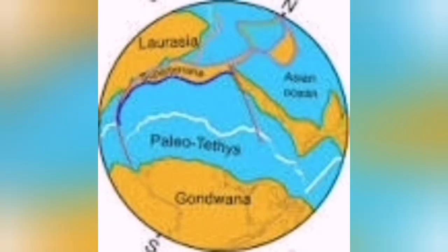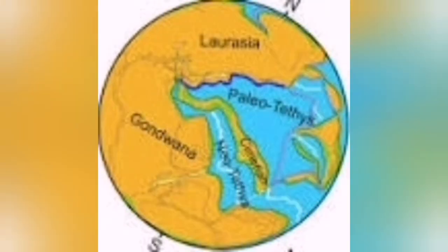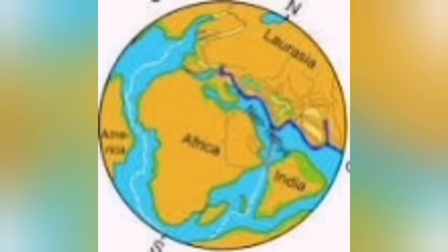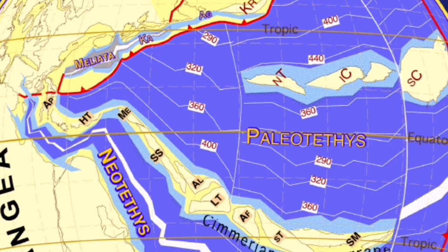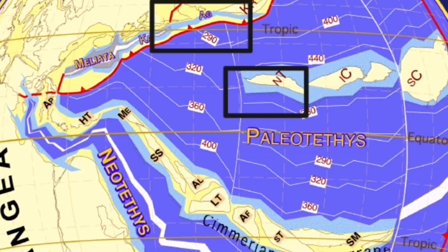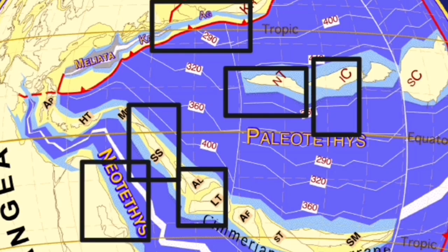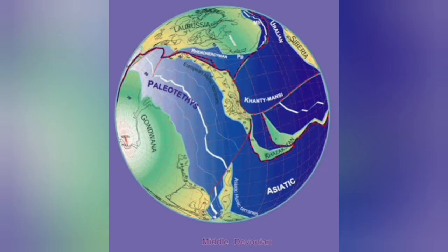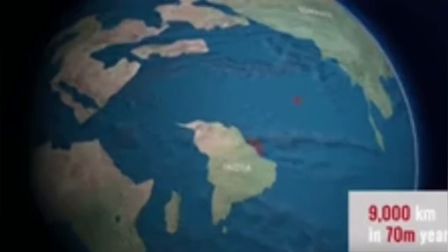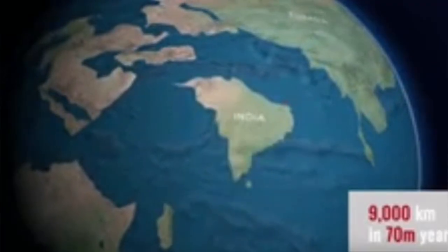The Iranian plateau began forming when the Paleo-Tethys Ocean was closing down due to the breakdown of Gondwana. As Gondwana closed, the process created arcs of islands — like what we see in Indonesia today. These island arcs eventually joined together, from Africa — the remnant core of Gondwana — to Eurasia, forming a solid mass we call the Iranian plateau.